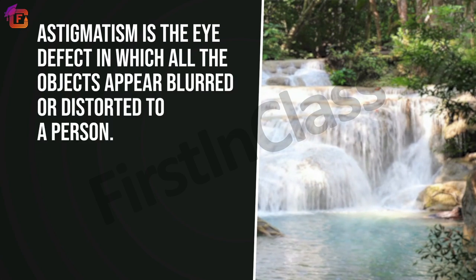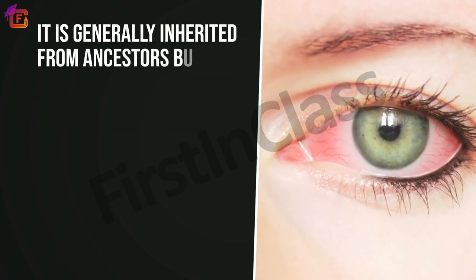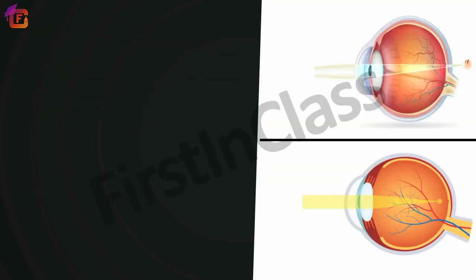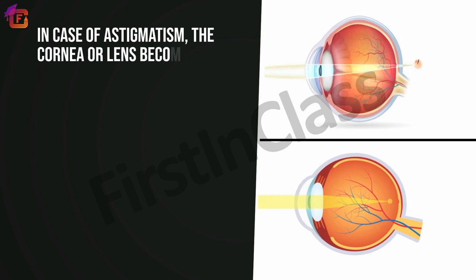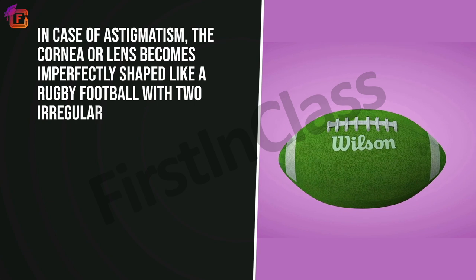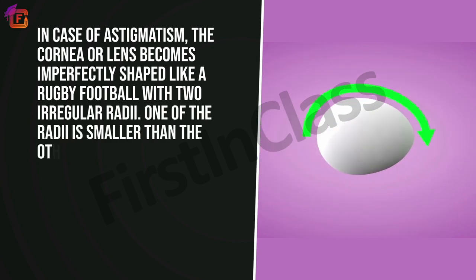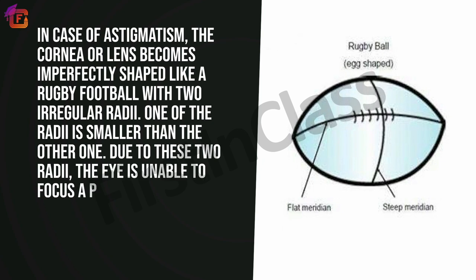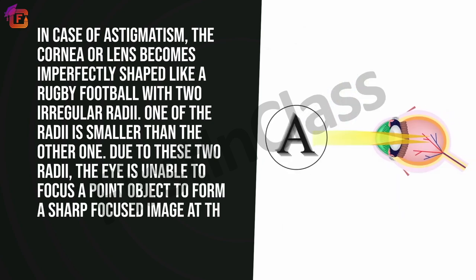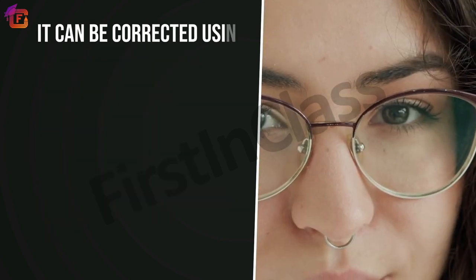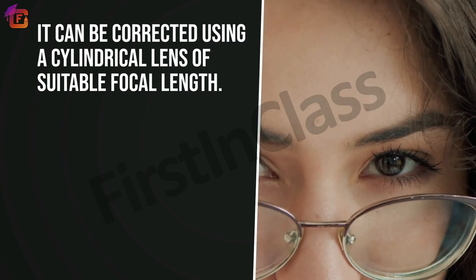Astigmatism is generally inherited from ancestors but can also be caused by eye injury. In this condition, the cornea or lens becomes imperfectly shaped, with two irregular radii — one smaller than the other — making the eye unable to focus a point object into a sharp image at the retina. It can be corrected using a cylindrical lens of suitable focal length.